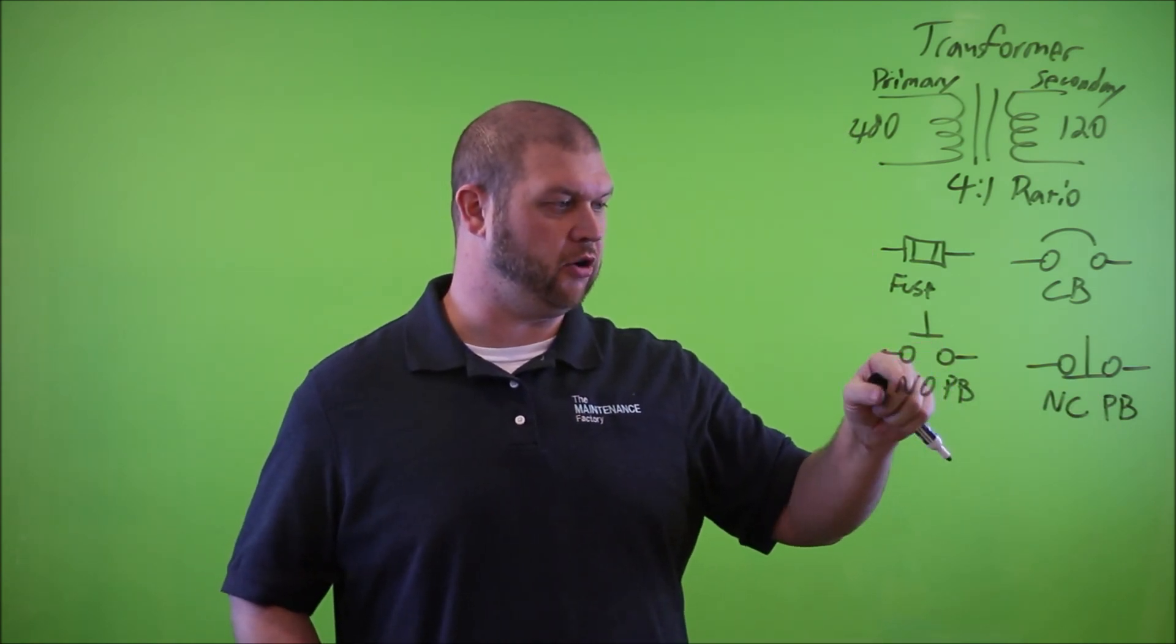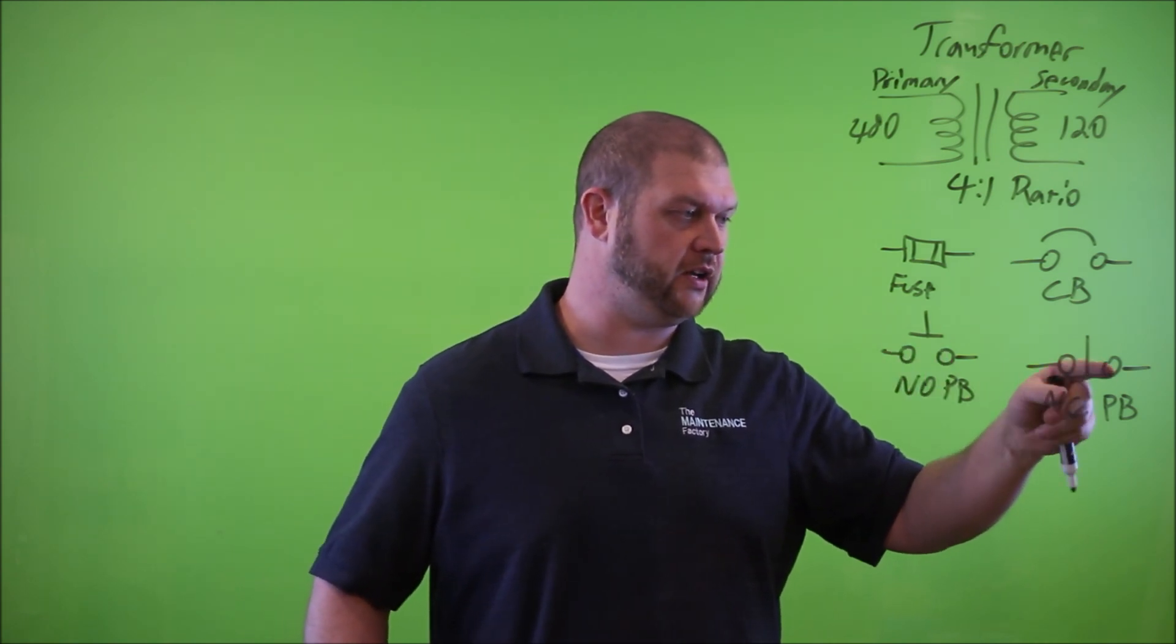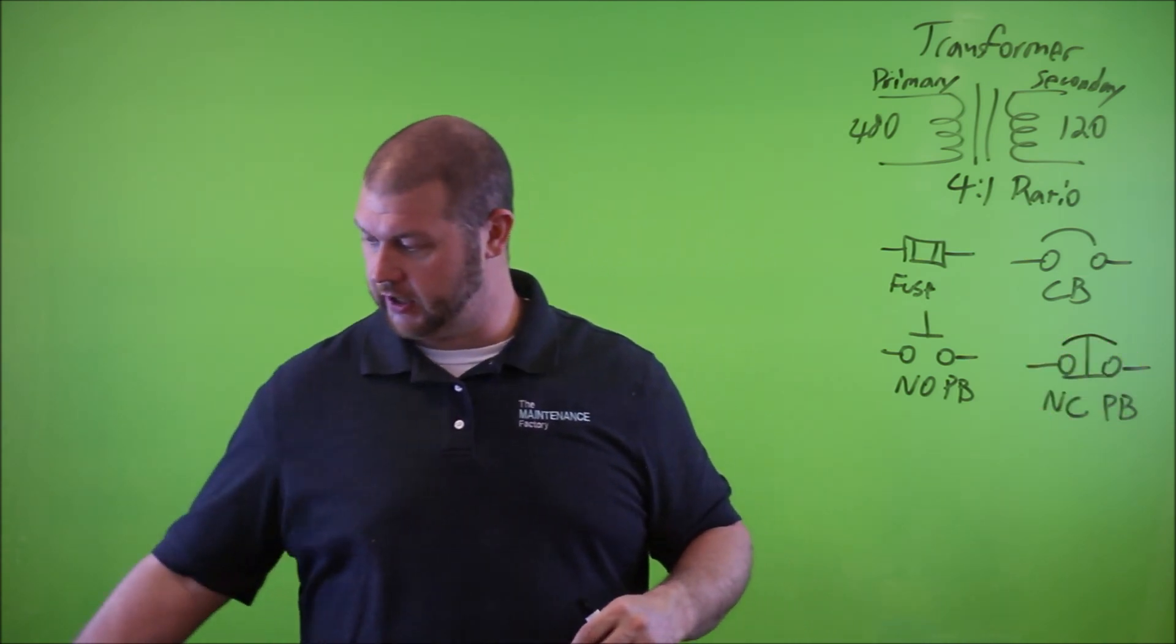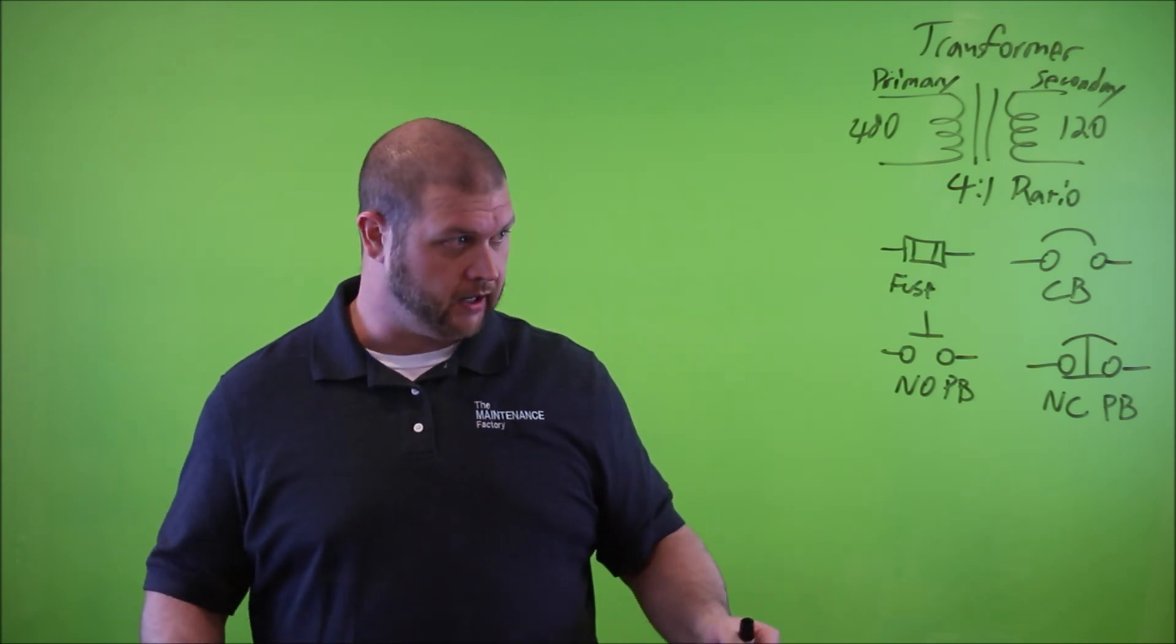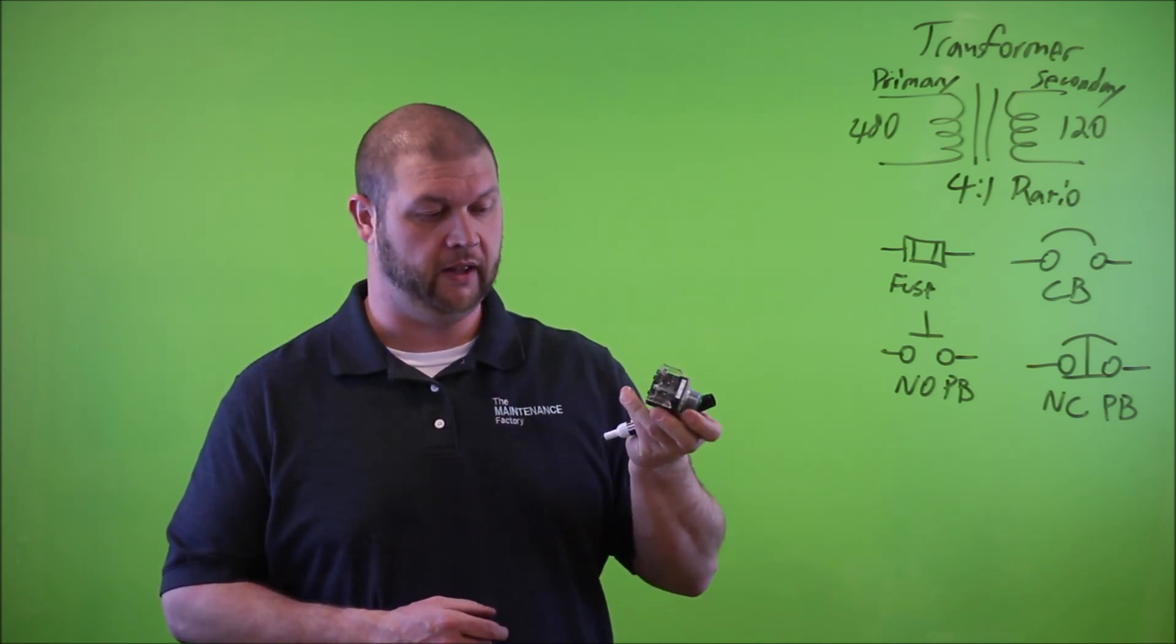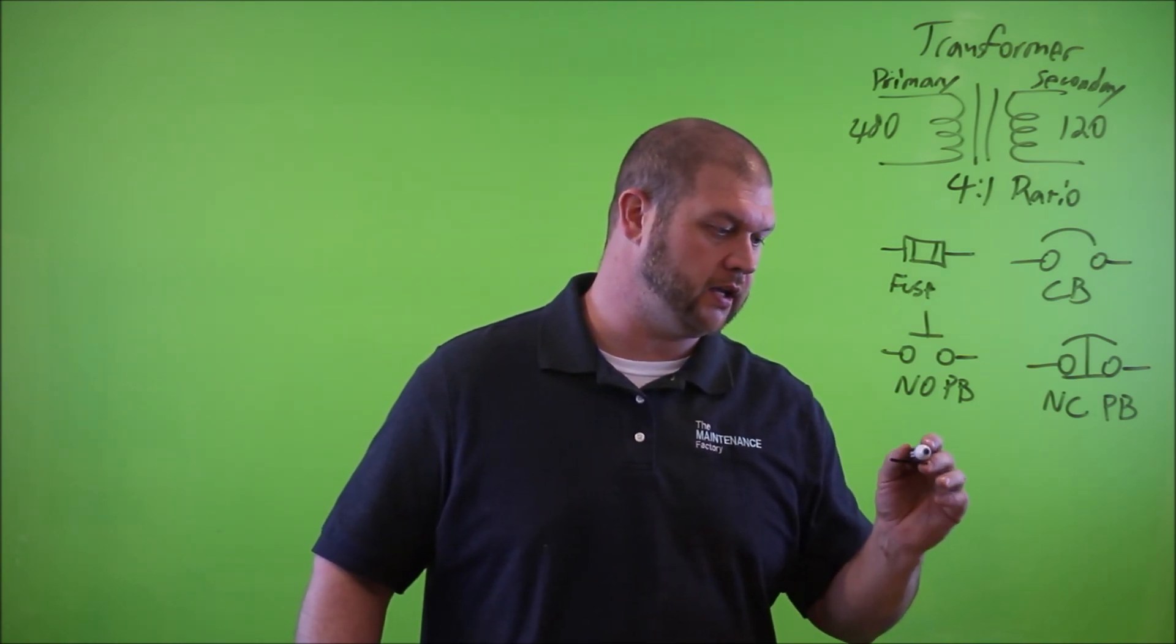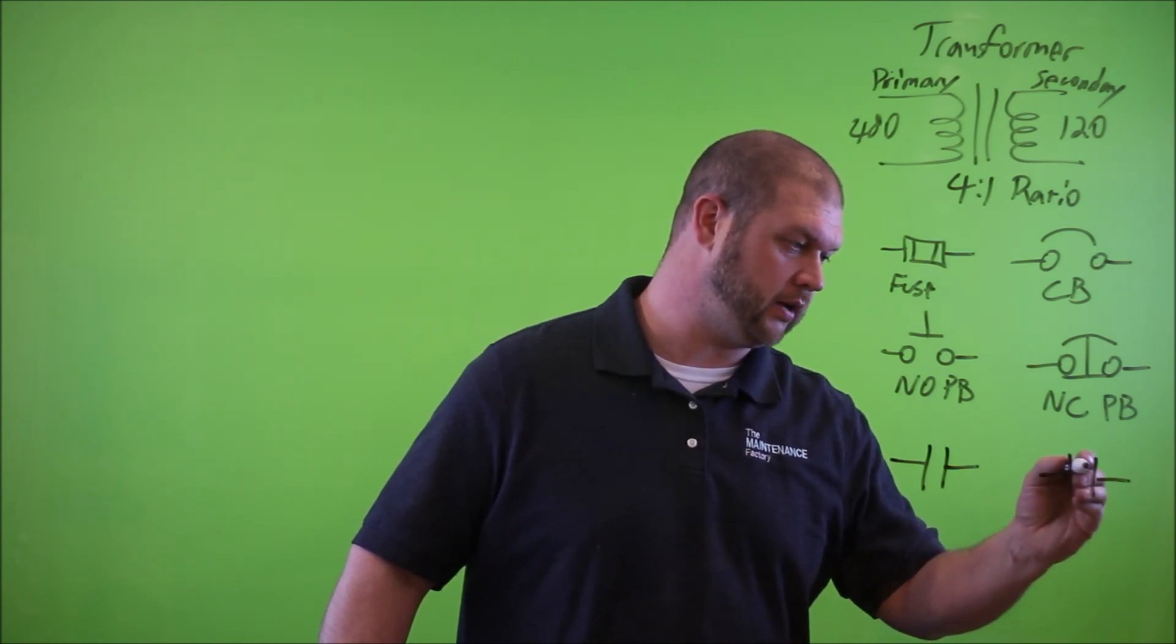You'll notice that the normally open push button has a contact point on the top of these terminations, and on this one you have it actually physically connected and it's on the bottom side. Sometimes these will have an arch on the top and that signifies that it is a mushroom style push button, much like an e-stop. This normally open push button may look like this green start button that has a normally open set of contacts.